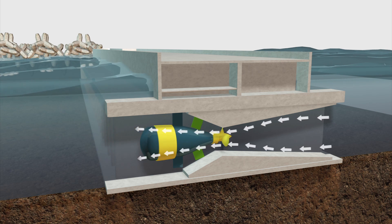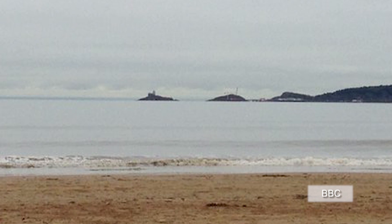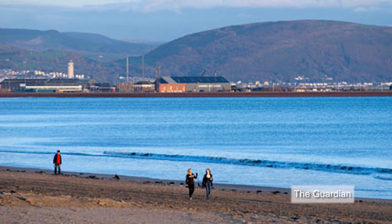This process then occurs in reverse on the ebb tide. It is estimated that the lagoon could provide enough electricity to power around 120,000 homes.